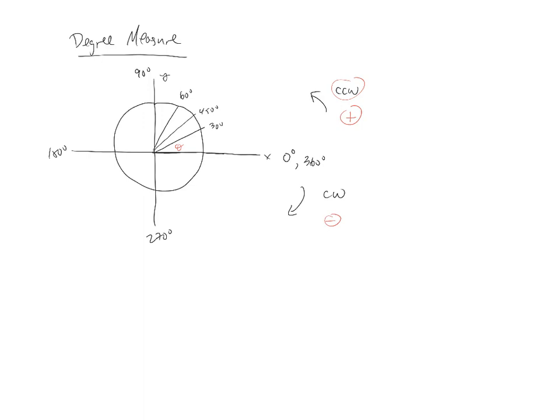And so, for example, if I went clockwise, this would be a negative 90 degrees. This would be a negative 180, a negative 270, and then we're back to a negative 360 degrees. So the negative is only dictated by the direction in which the angle is traced out.